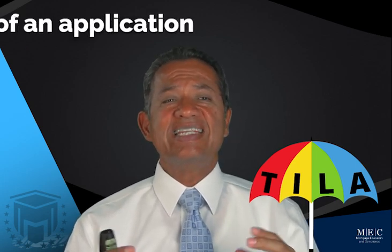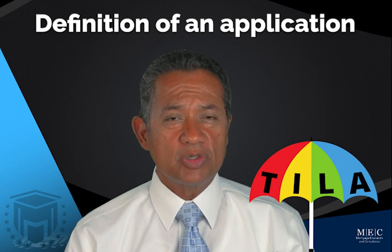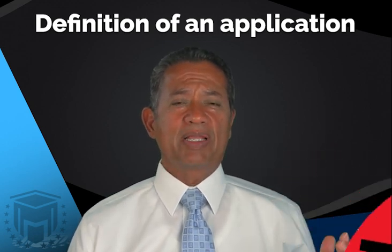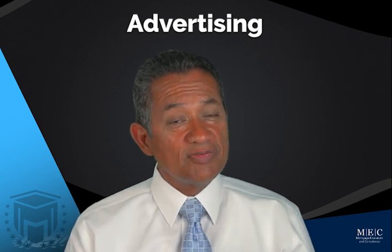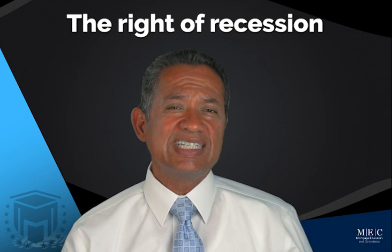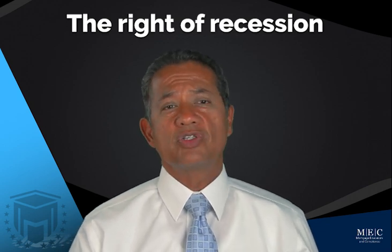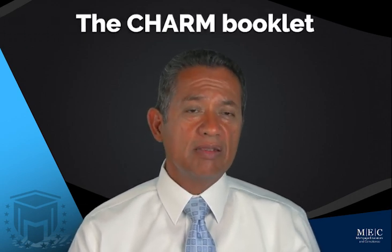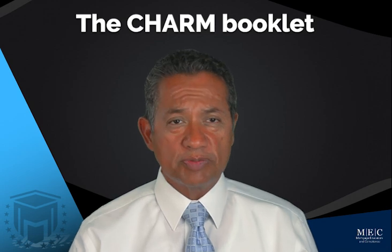The TILA umbrella also covers other topics including the definition of an application — what is an application, when do you have one, how many pieces of data are included. We'll spend time on advertising because you don't want to do it wrong — it's a federal law. TILA also covers the right of rescission, and for adjustable-rate mortgages, the consumer handbook known as the CHARM booklet.